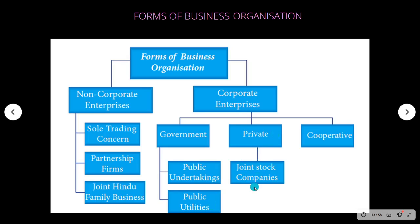So the forms of organization are divided into two categories: non-corporate enterprise and corporate enterprise. Under non-corporate we have sole trading, partnership firm, and joint Hindu family business. Under corporate you have government, private, and cooperative, which is subdivided into public undertaking, public utilities, and private joint stock company.